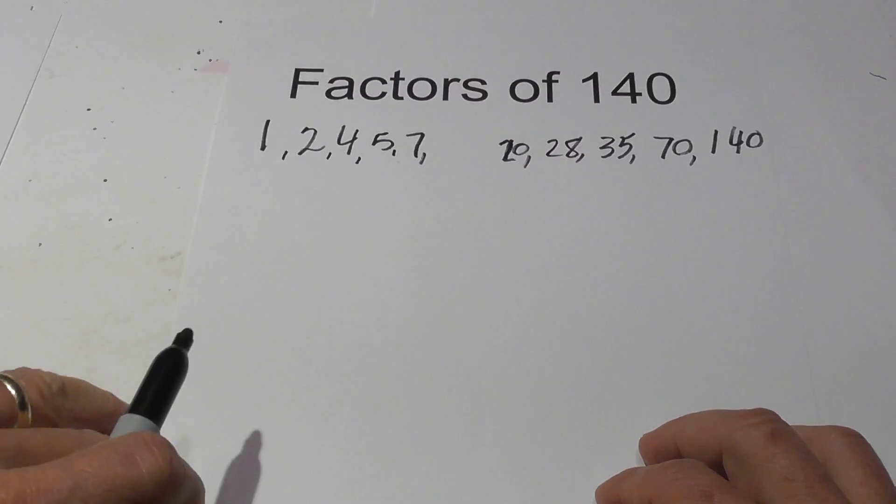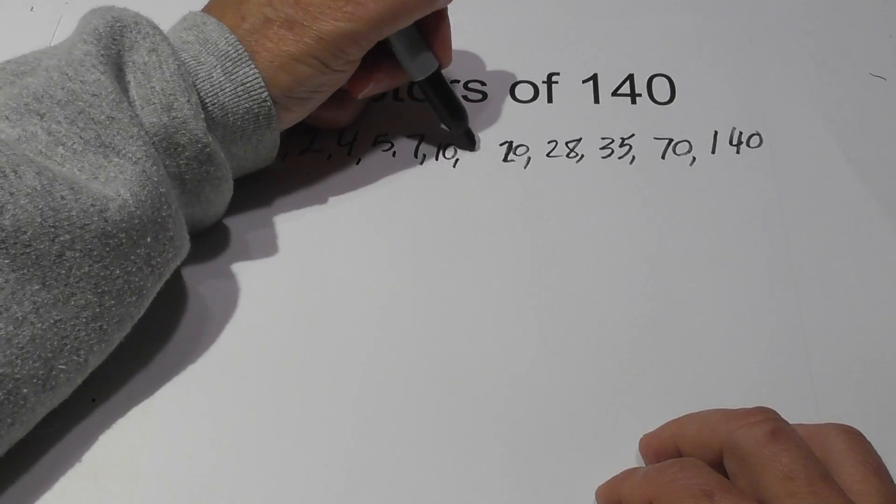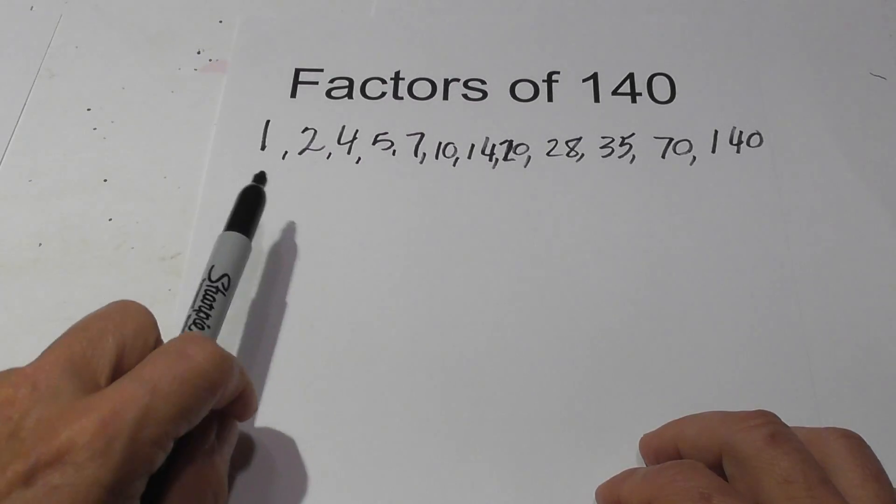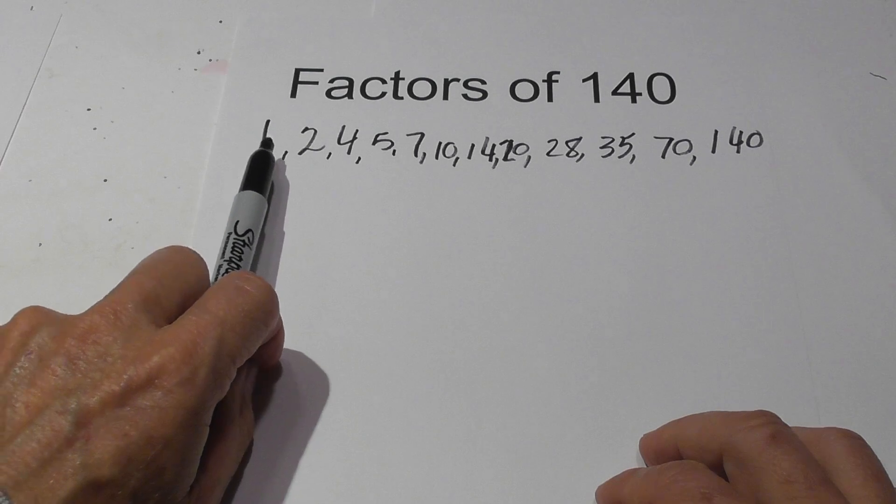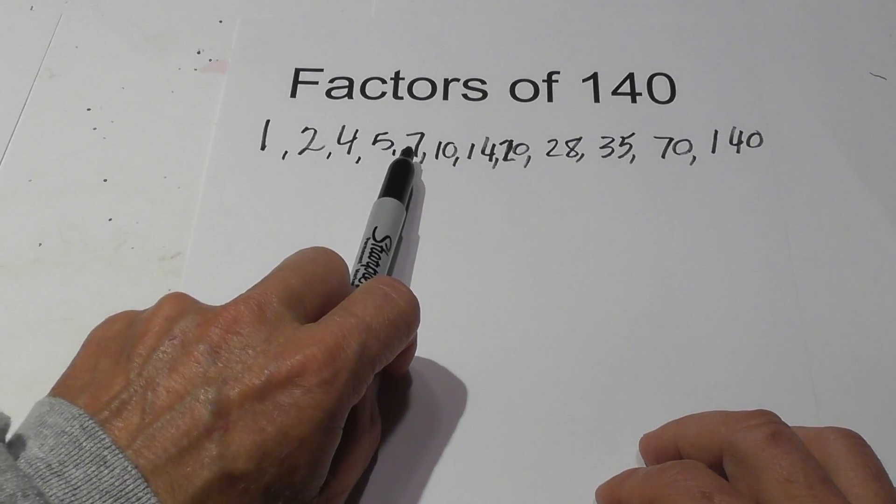Then 10 and 14. So the factors of 140 are 1, 2, 4, 5, 7, 10, 14, 20, 28, 35, 70, and 140.